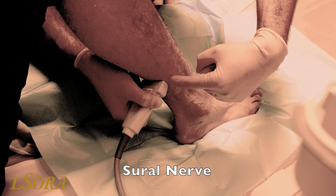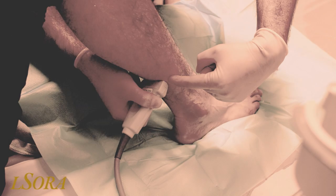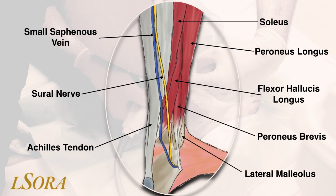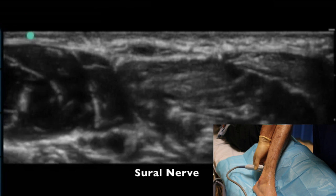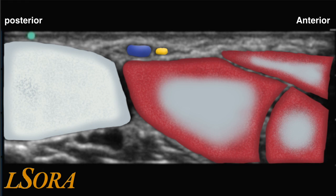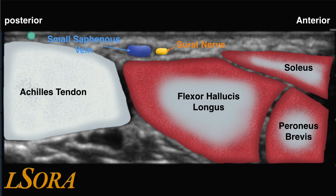Finally, the probe is moved to the posterior aspect of the leg to scan for the sural nerve. Looking at the anatomy of the posterolateral aspect of the ankle, you will identify that the sural nerve lies in close proximity to the small saphenous vein, which is a useful ultrasound landmark. We are also surrounded by the Achilles tendon most posteriorly, the muscles of peroneus longus, peroneus brevis, and flexor hallucis longus. To scan for the sural nerve, the probe is placed at the posterolateral aspect of the ankle. Once the Achilles tendon has been identified, ensure that you identify the small saphenous vein, as the sural nerve will lie in close proximity to it.